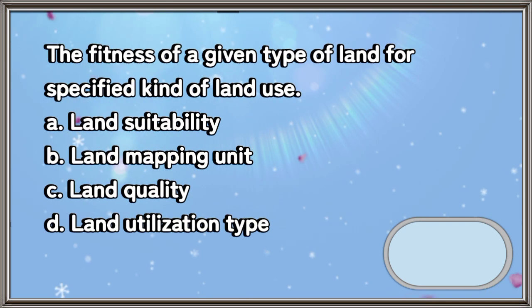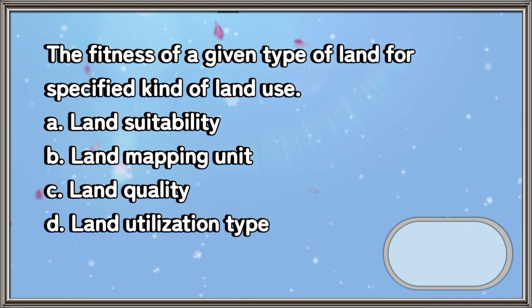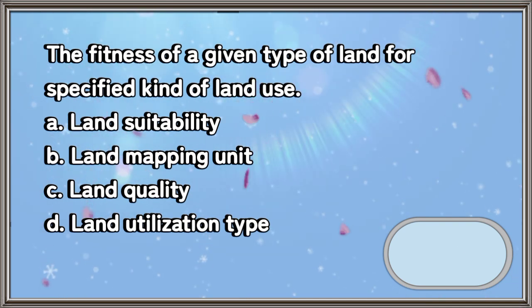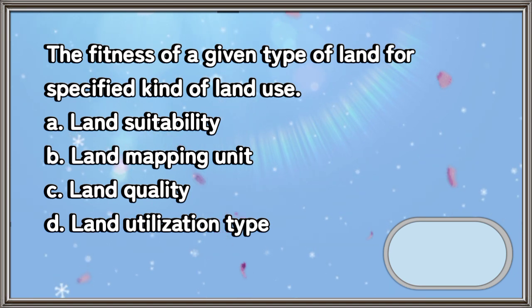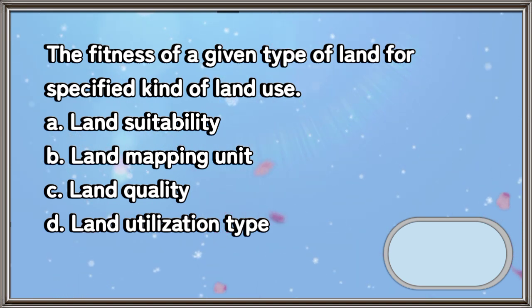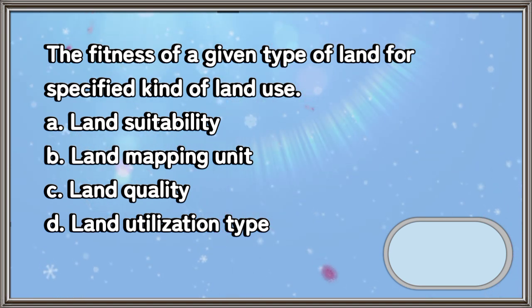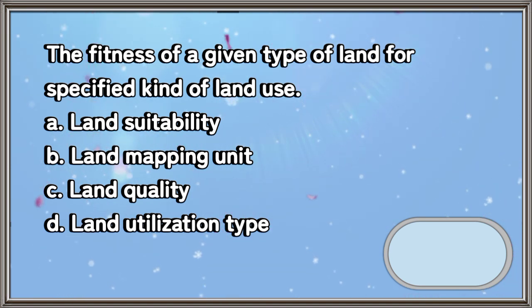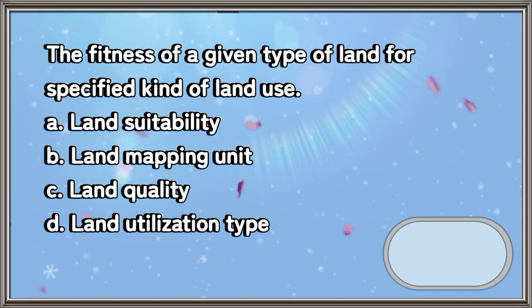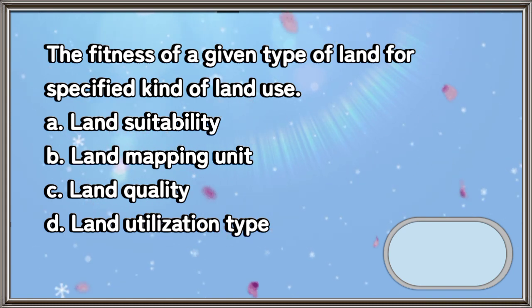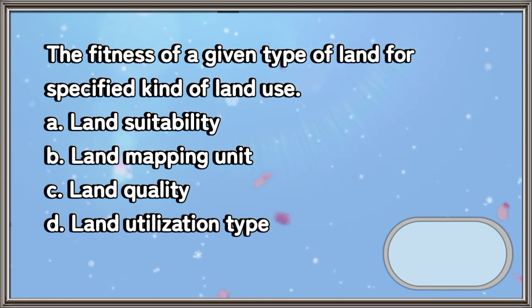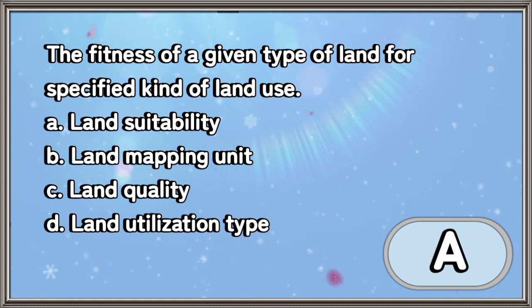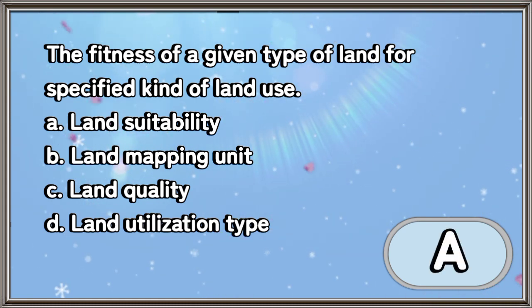The fitness of a given type of land for a specified kind of land use: A. Land suitability, B. Land mapping unit, C. Land quality, D. Land utilization type. The answer is letter A.